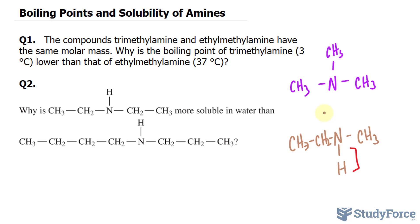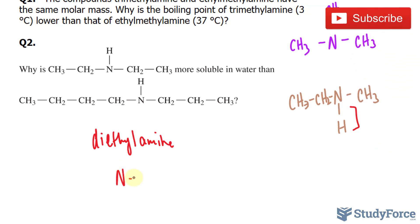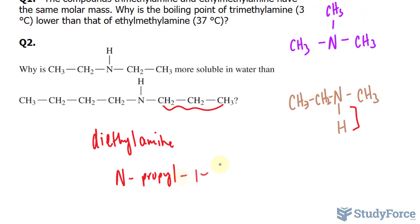In question two, why is this molecule more soluble in water than this molecule? I want to start off by actually naming these two. Here we have diethylamine — that's the common name, not the IUPAC name. And this one right here is N-propyl-1-butanamine — that's the IUPAC name. The common name is N-propyl-butylamine. So why is this one more soluble? They both have an N-H, so we can't use that as an excuse.